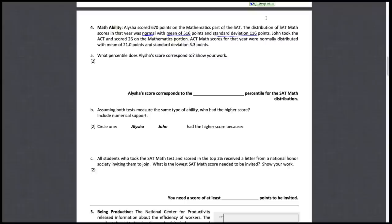Now John took the ACT and he scored a 26 on the math portion, and the model for those scores of course are all going to be different, still normally distributed, bell-shaped, with a mean of 21, and a give or take a little more than five. He also scored above the mean.